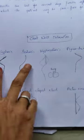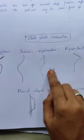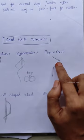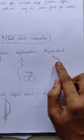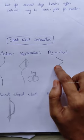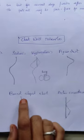Kyphoscoliosis is a combination of distortion and lung involvement. Pigeon chest is the protrusion of the sternum or ribs — a front side protrusion.